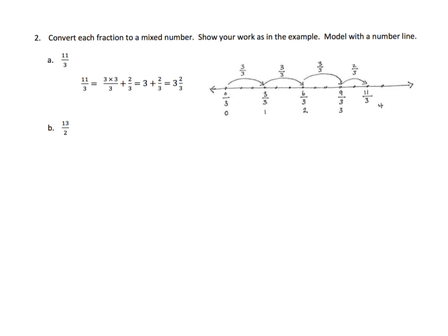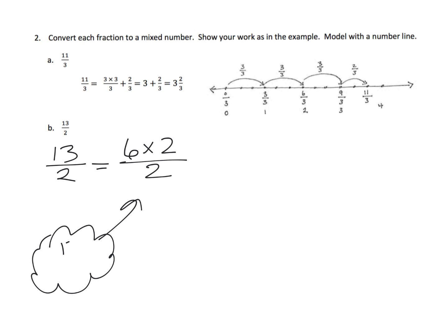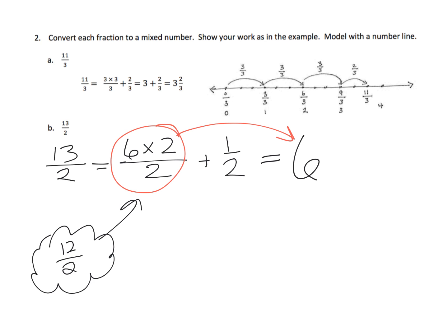Here, they're asking us to record our thinking in a slightly different way — more closely towards that standard algorithm. For thirteen-halves: we know we could do six copies of two halves, because six copies of two halves gives us twelve halves, plus we have one half more, because we needed thirteen halves altogether. If you have six copies of two halves, that's equal to six. So that whole thing is six, and then we have this half left over — our answer is six and a half.